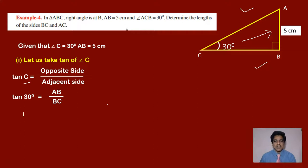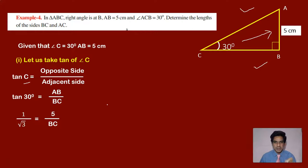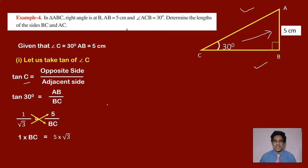So on the left hand side we write 1 by root 3, and on the right hand side AB is 5, so we have 5 divided by BC. Doing cross multiplication, 1 into BC equals 5 into root 3. Therefore BC is equal to 5 root 3 centimeters. We have found the adjacent side.